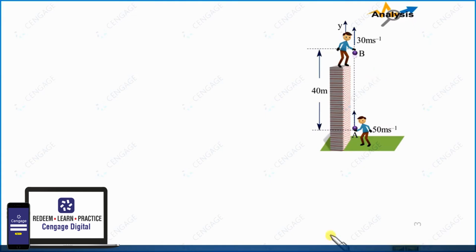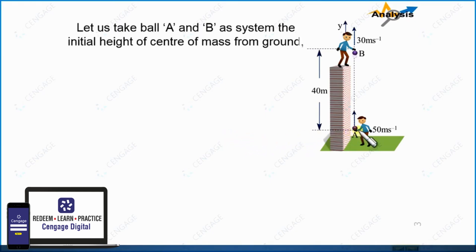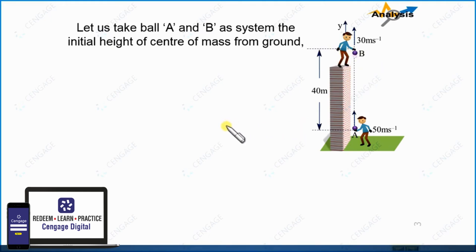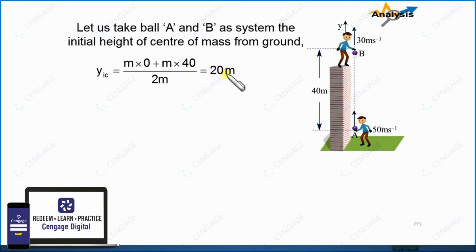Let us find the initial height of the center of mass at the time just before throwing the balls. We write the initial height of the center of mass as y-initial-CM, equal to m multiplied by 0 — taking this as the initial level — plus m multiplied by 40, because this height is 40 meters, divided by the total mass m plus m which is 2m. This equals 20 meters — the initial height of the center of mass at the time of throwing.